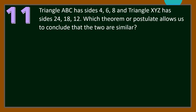Number 11. Triangle ABC has sides 4, 6, and 8, and triangle XYZ has sides 24, 18, and 12. Which theorem or postulate allows us to conclude that the two are similar? For our solution, let us arrange the lengths of the sides of the two triangles correspondingly.